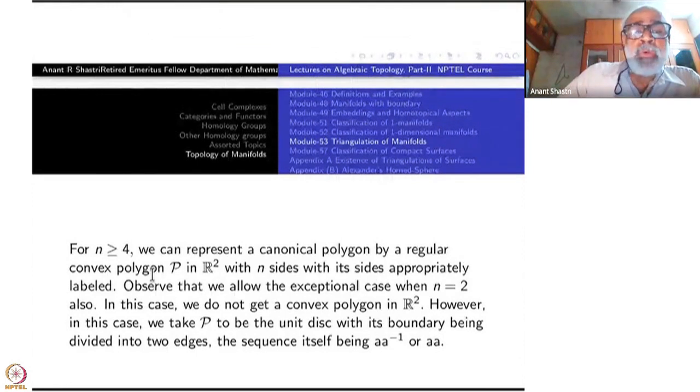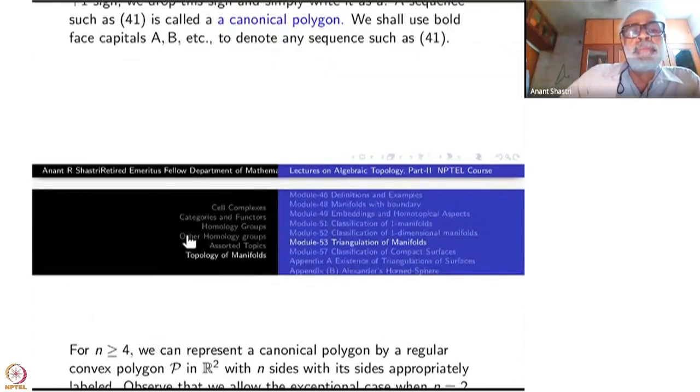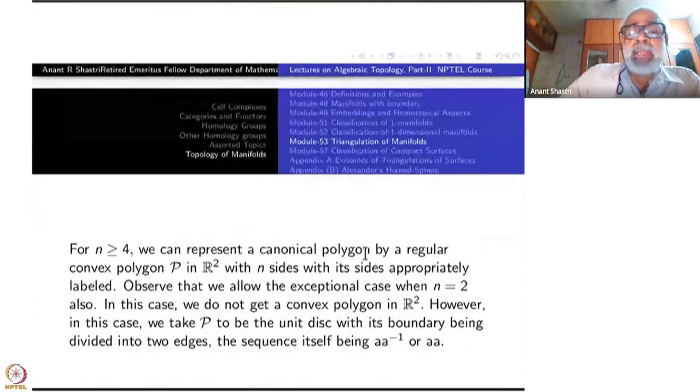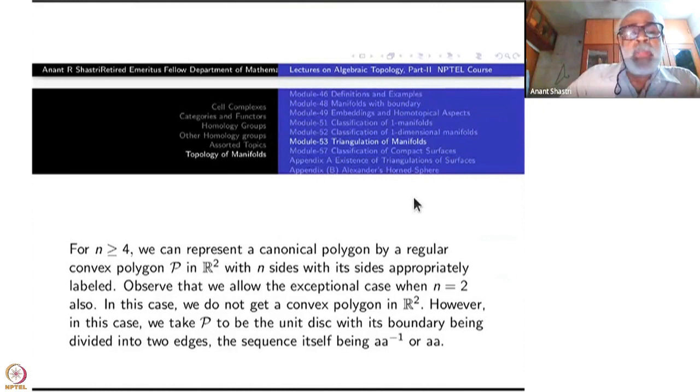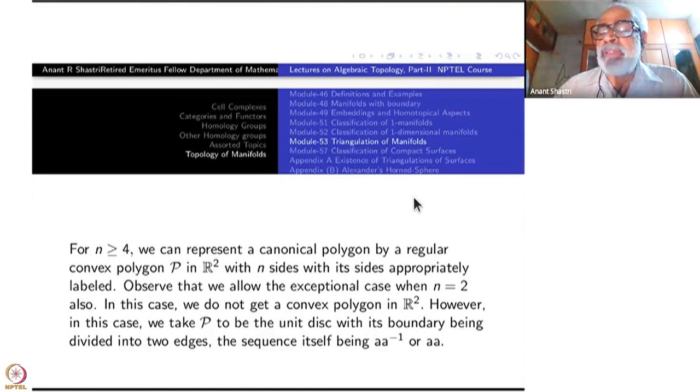For N greater than or equal to 4, we can represent a canonical polygon, the sequence, by actually a regular convex polygon. Three also you can do, but three doesn't occur in our case. Just minimum is 4. If there is 2 or 0, where is the polygon you can draw? So I did discuss that case first, later on. So for N greater than or equal to 4, actual convex polygon you can write. Regular convex polygon P in R2 with N sides, with its sides appropriately labeled.